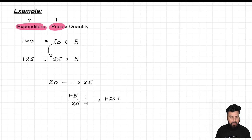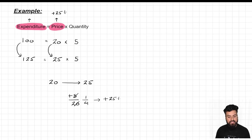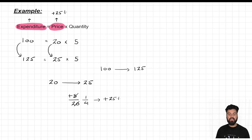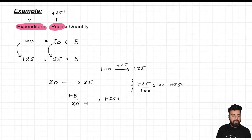So what can we understand from this? The price was increased by 25%. So if price is increased by 25%, by how much percent did the expenditure increase? Initial expenditure was 100, and after the price increase the new expenditure became 125. Increase in expenditure is 25, over initial expenditure 100, multiplied by 100 — that gives 25%. So expenditure also increased by 25%.